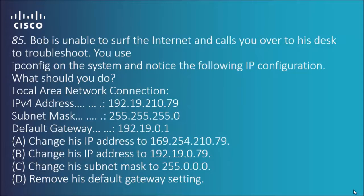Let's go through the options. Change his IP address to 192.168.x.x — no, because of the way the subnet mask is assigned. Option B is a possibility. Option C suggests the subnet mask should be something else — I tend not to lean towards that. Remove his default gateway setting — I wouldn't recommend that because it looks as though it's on the right network, 192.19.x.x, which looks about right going by the subnet mask with three lots of 255s.